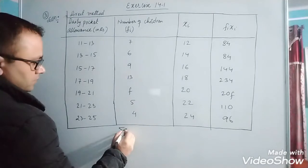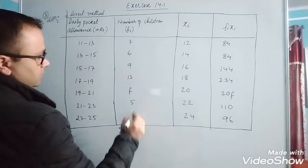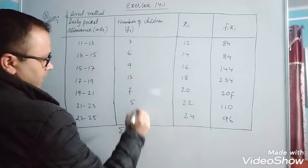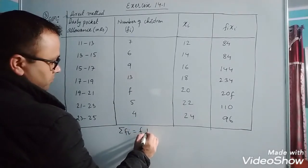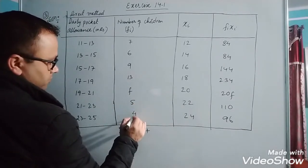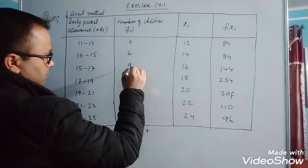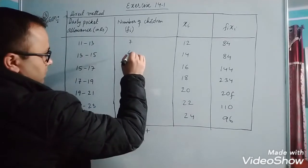Now we can add. First calculate summation fi equals to, now first take this f here, plus 5 plus 4 is 9, 13, 22, 31, 37, 44.